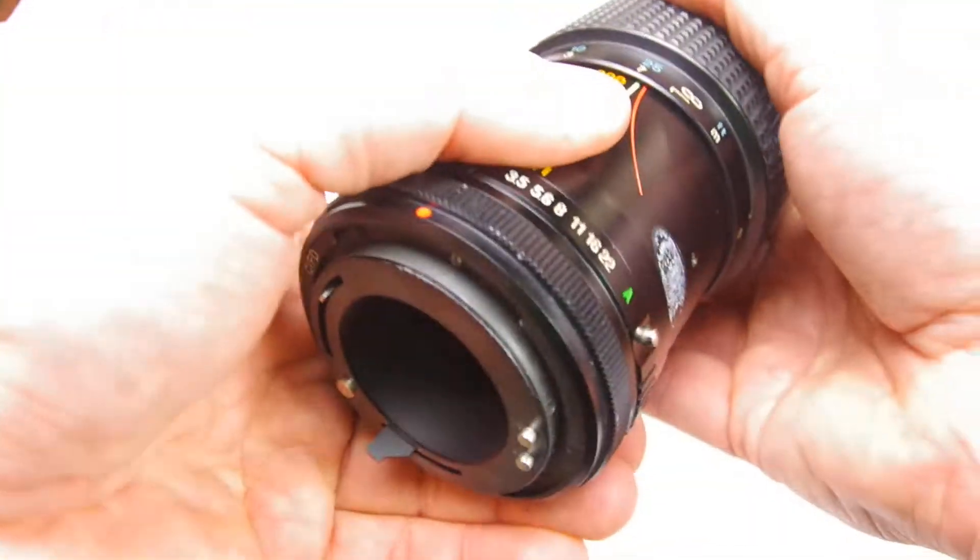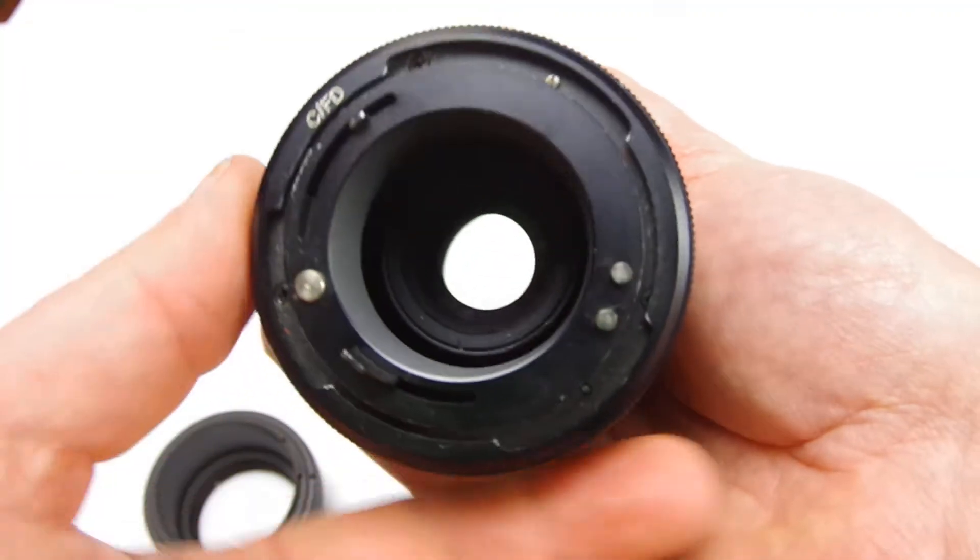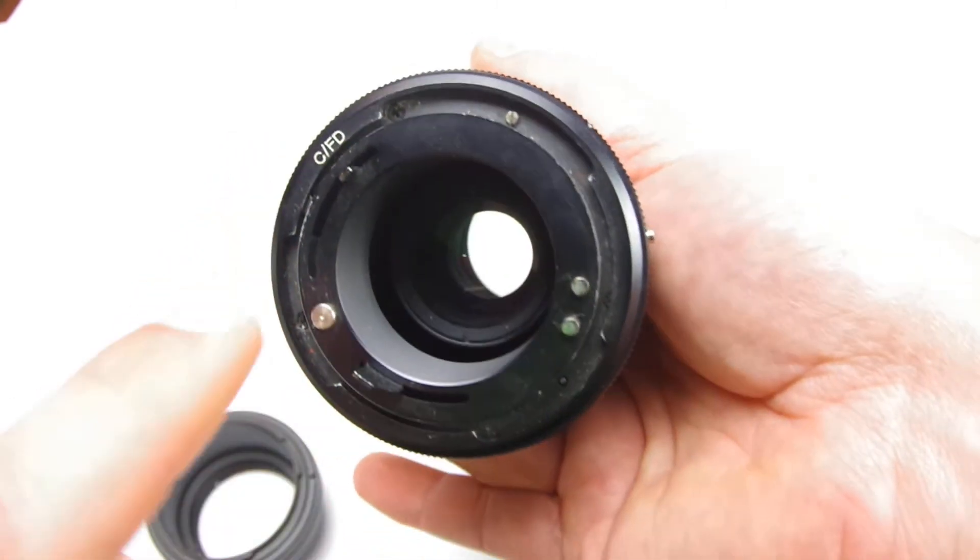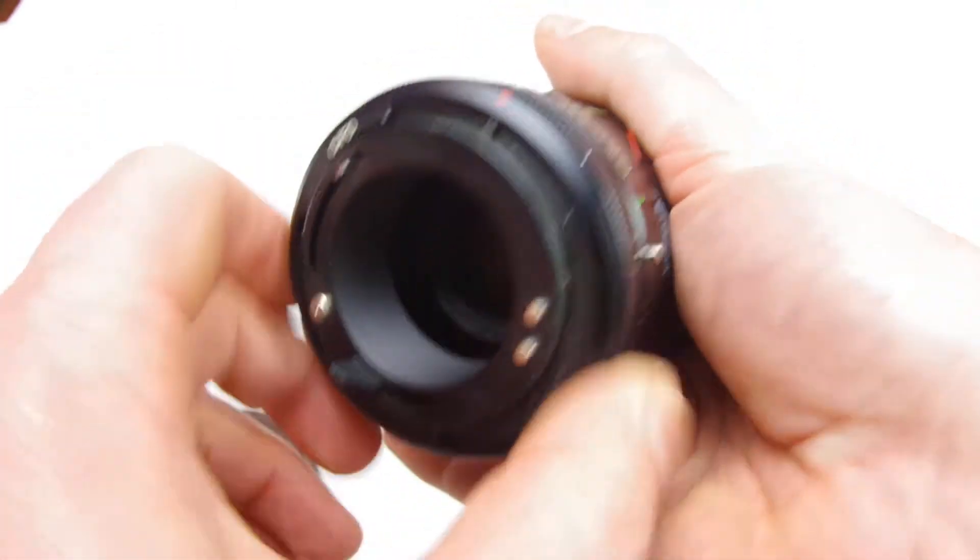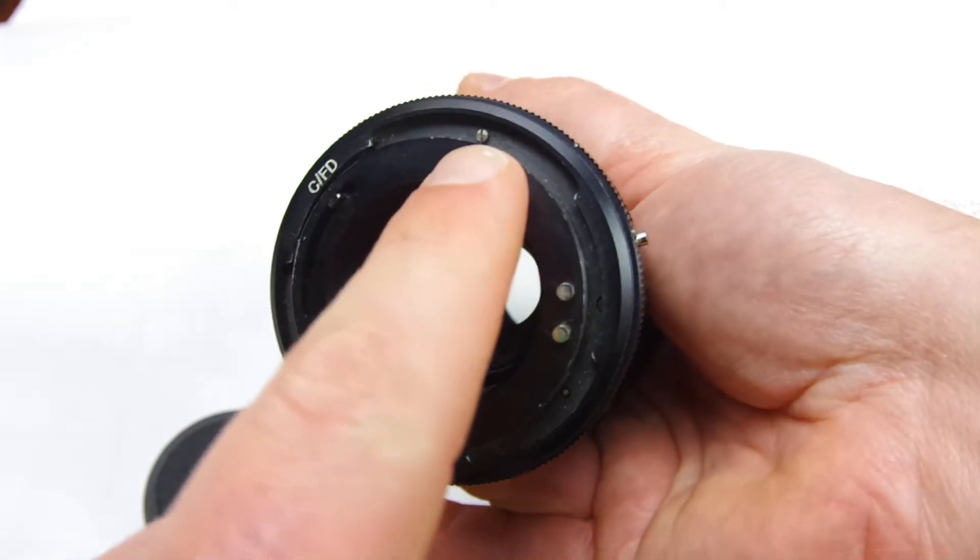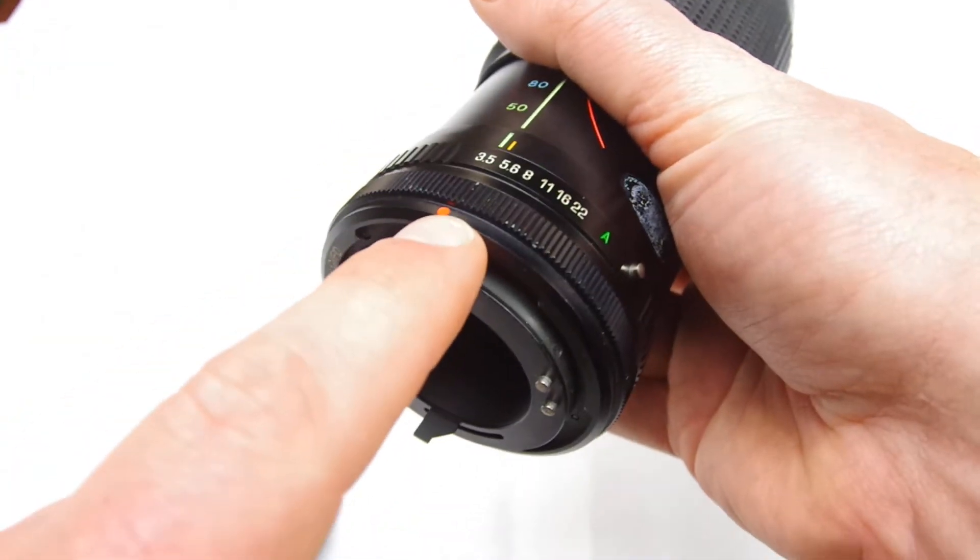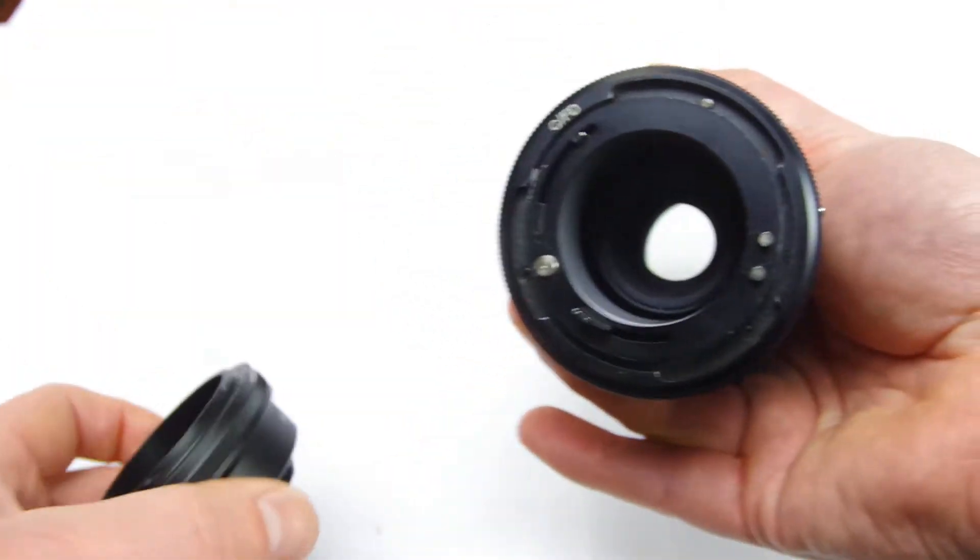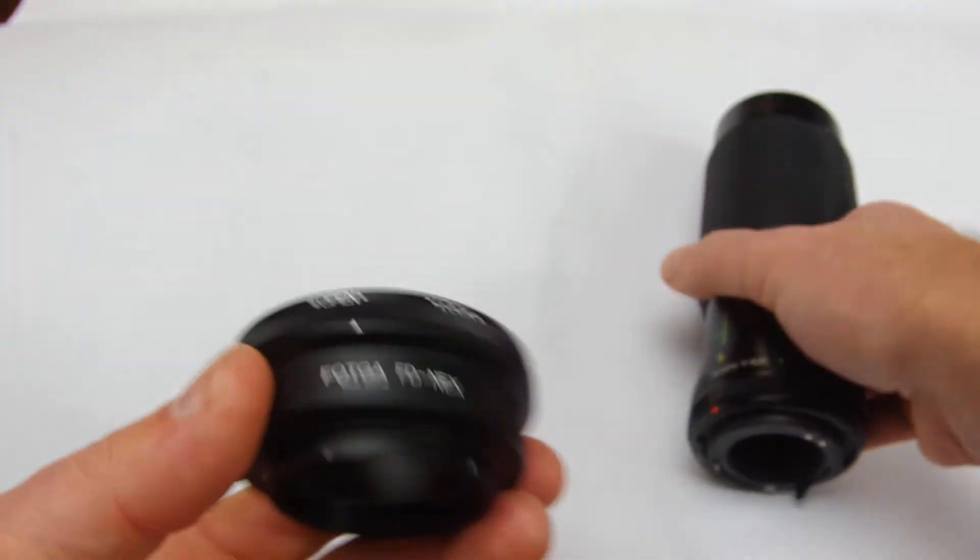You've got your FD lens, an old Canon mount lens. You see here it's got this little ring that goes back and forth, and there's a little pin there that usually lines up with this red dot. You want to put it at the red dot that lines up there.